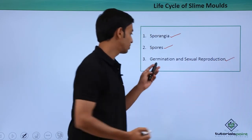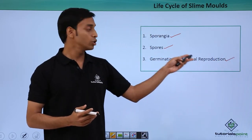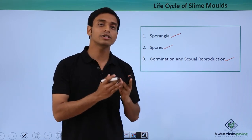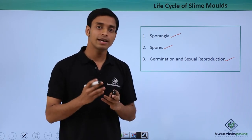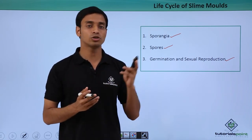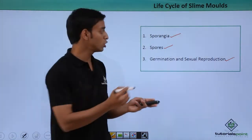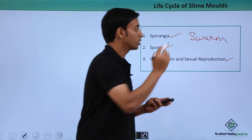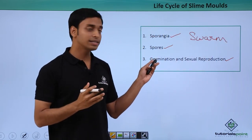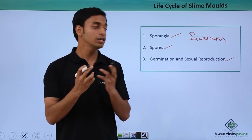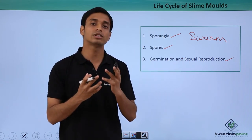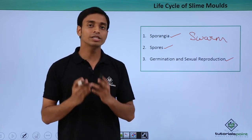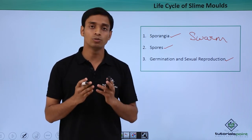The third life cycle is germination and sexual reproduction. When conditions are favorable, spores germinate. The germinated spores of slime molds are given the term swarms — S-W-A-R-M. These swarms fuse together to give rise to a new diploid individual. This is a form of sexual reproduction.